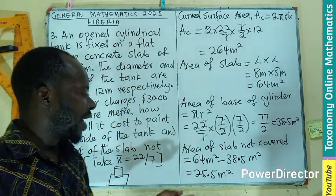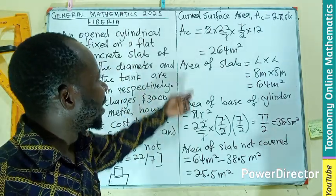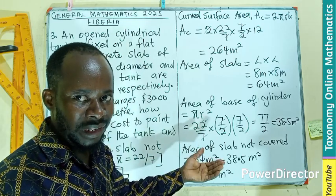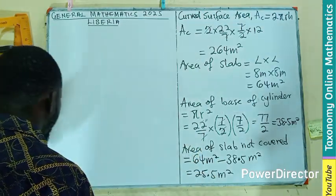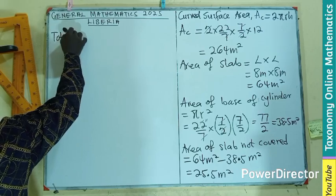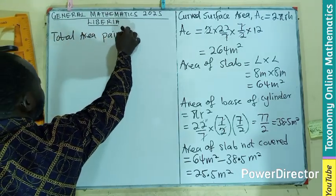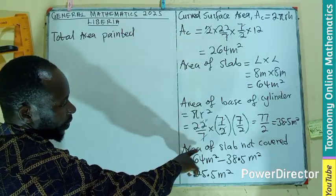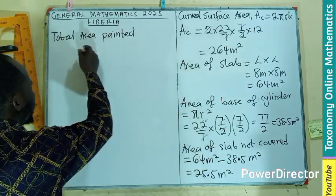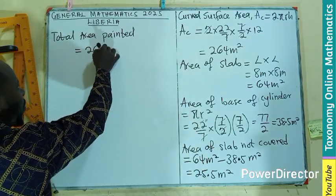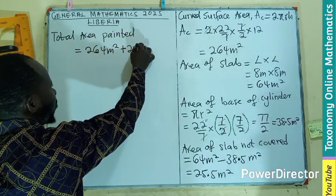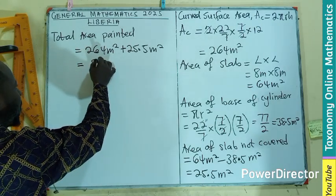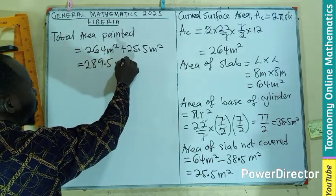This is the area we're going to apply the paint to, and this is also the area we're going to apply the paint to. What is the total area that the paint is going to cover? We need to find total area painted, which is area of C plus area of slab not covered. That equals 264 meters square plus 25.5 meters square. When you put that in the calculator, you have 289.5 meters square.